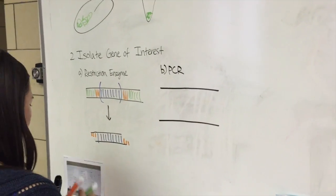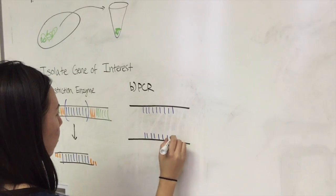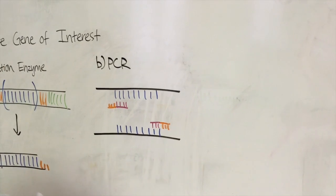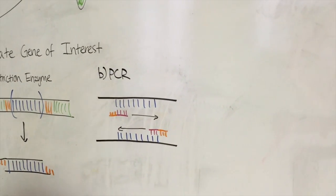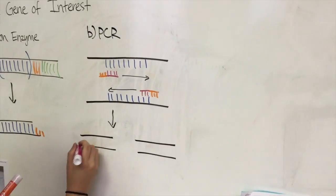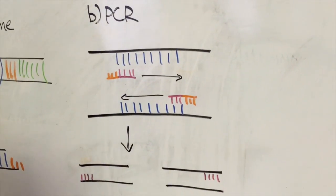If there are no restriction enzyme sites around the gene and/or there is not enough DNA isolated, perform PCR using primers designed with restriction enzyme sequences. This will make more copies of the gene of interest and introduce restriction enzyme sites on either side of the gene copies.